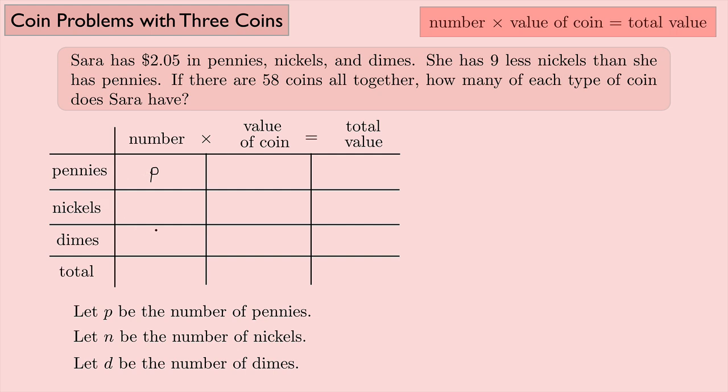For the number of nickels, she has nine less nickels than pennies. So that must mean if you take the number of pennies and subtract nine from it, that should give me the number of nickels. So think about that. She has nine less nickels than she has pennies. Think about if that makes sense. Take the number of pennies and subtract nine from it; that should give you nickels.